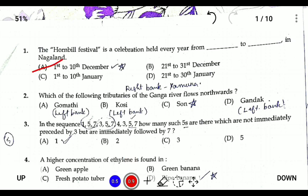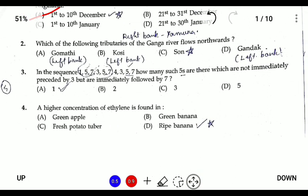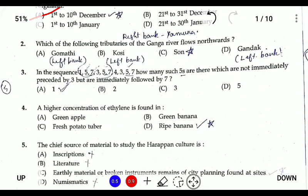Question two: which of the following tributaries of the river Ganga flows northwards? The river Sone flows northward, while the rest — Gandak, Kosi, and Gomati — are all left-bank tributaries. A right-bank tributary of the Ganga is the Yamuna.